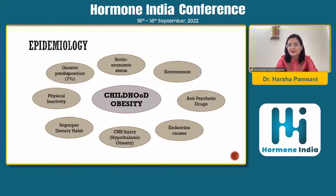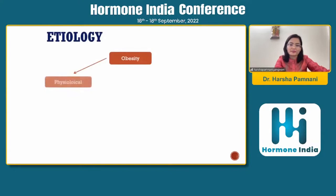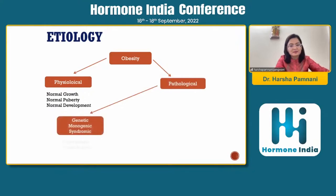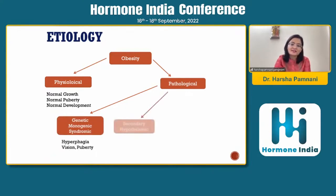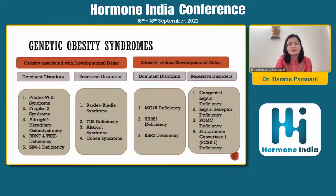Childhood obesity has multiple reasons, and today we will discuss genetic predisposition as one of the causes. The etiology of obesity includes physiological causes such as normal growth, puberty, and development, and pathological causes. Pathological causes include genetic monogenic syndromes — in which patients mainly have hyperphagia, vision, and puberty problems — secondary hypothalamic causes with hyperphagia, and endocrine causes such as hypothyroidism, GHD, and Turner syndrome, where growth and puberty delay are present. Today we focus on genetic monogenic obesity.